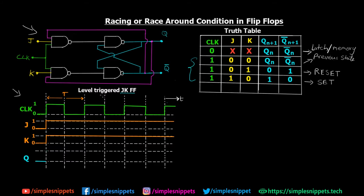This timeline chart has time on the x-axis and digital levels 0 and 1. The J and K signals are always high because we are discussing the case where J is 1 and K is 1. We are going to look at the Q signal — what happens to Q when the clock is also high. Q bar is exactly opposite to Q, so we'll just monitor the Q output.